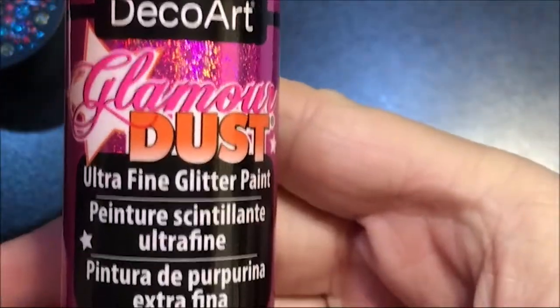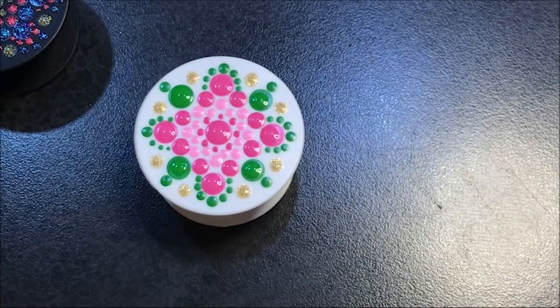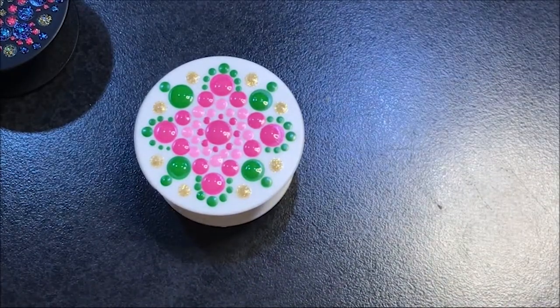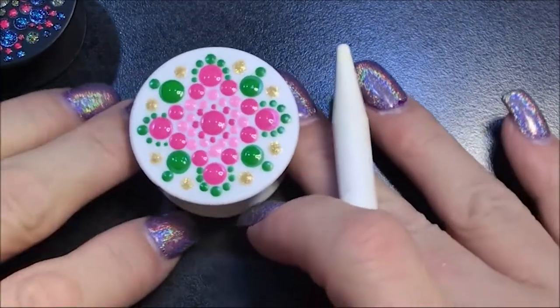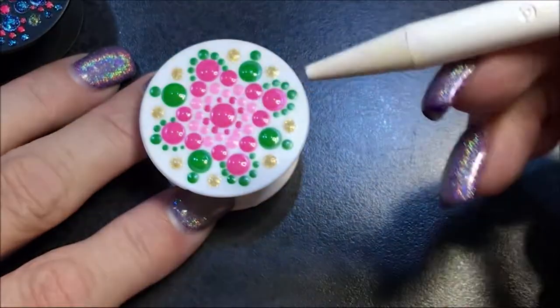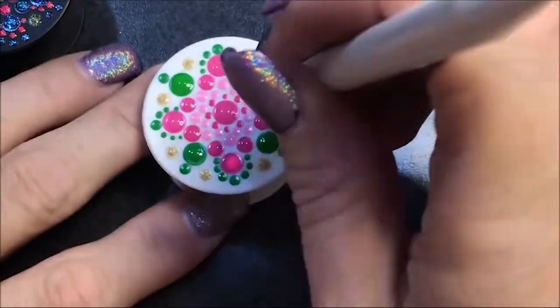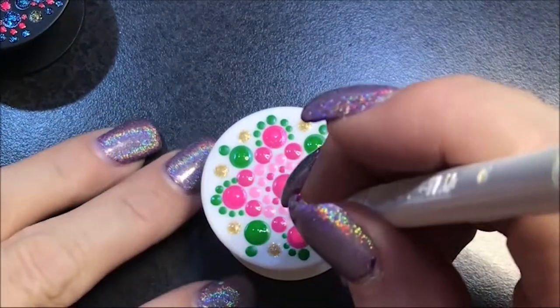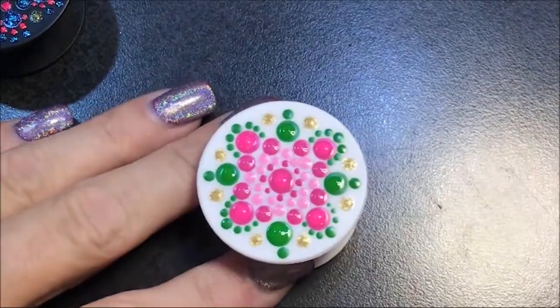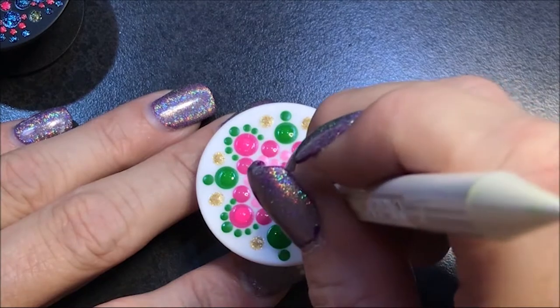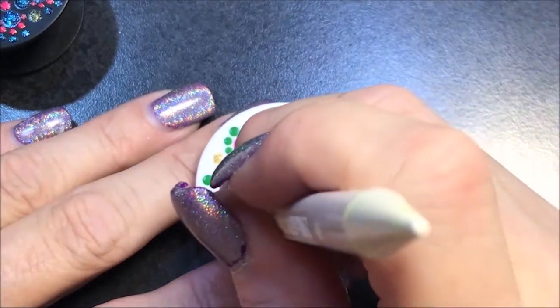So to start out, I've got this neon pink glamour dust. And this doesn't remain this color. It gets darker. So when you see it, don't think that that's what it's going to be. Okay, I'm going to go with the number five. And these big dots. And then the number four on the smaller dark purples.